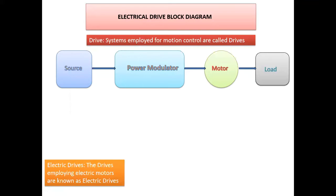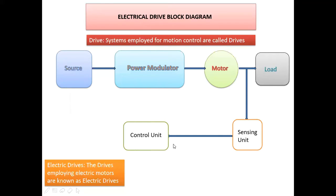Next, we go for the controlling. We have open loop control and closed loop control. Closed loop means automatic control; open loop means manual control. For most applications we require automatic control, so we use a sensing unit connected between the motor and load. The sensing unit is also connected to the control unit.